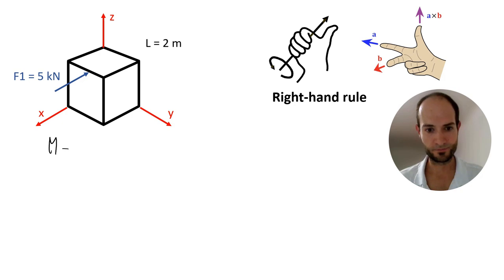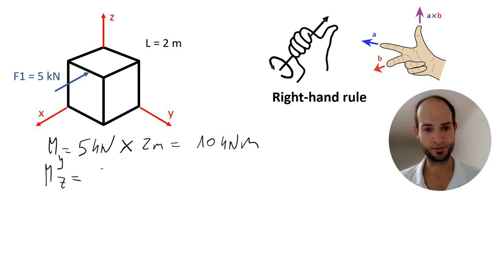Force times distance. So, we have the force, 5 kN, times the distance. This is at the top of the cube. So, we're going to be 2 meters to Y. That's 10 kN per meter. So, we have M on Y. Let's calculate the moment on the Z axis. The load is the same, 5 kN. And now, it's going towards Z. That's 1 meter for a total of 5 kN meter.